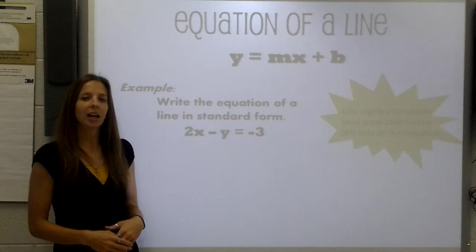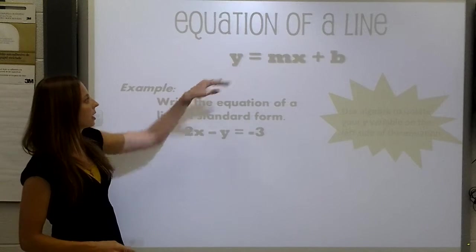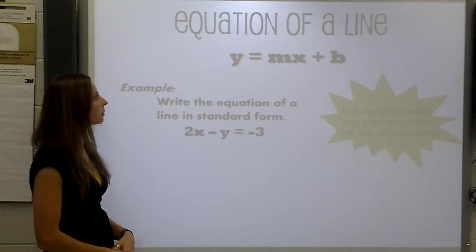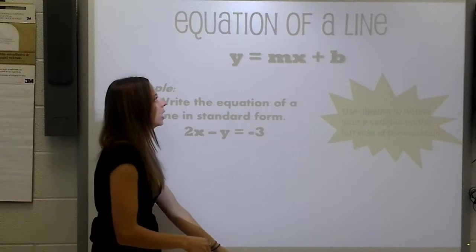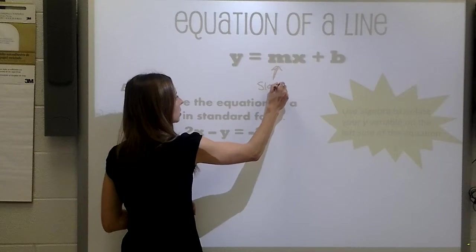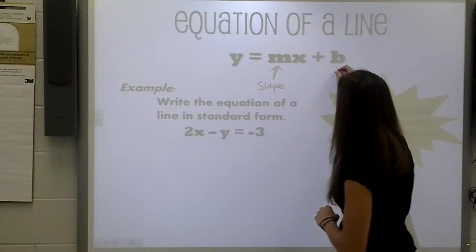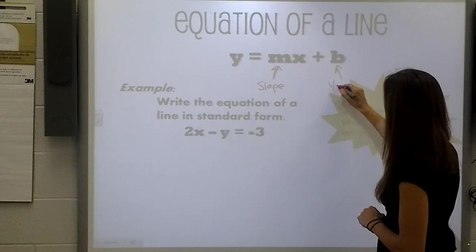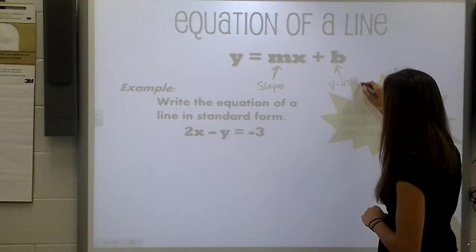The equation of a line in standard form can be seen as y equals mx plus b. m is representing your slope, and b represents the y-intercept on a graph.